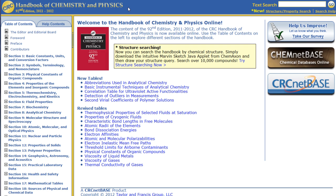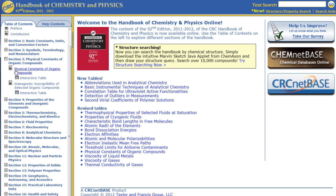You can browse the handbook using the table of contents just as you would in a print book. Click on the plus sign to the left of Section 3, Physical Constants of Organic Compounds.